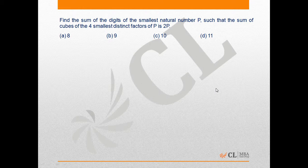We have to find the sum of the digits of the smallest natural number P such that the sum of cubes of the four smallest distinct factors of P is 2P.